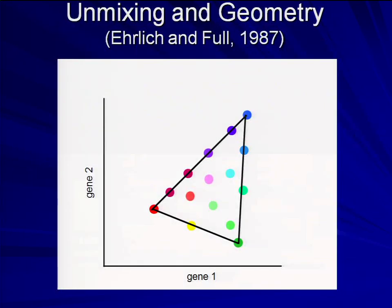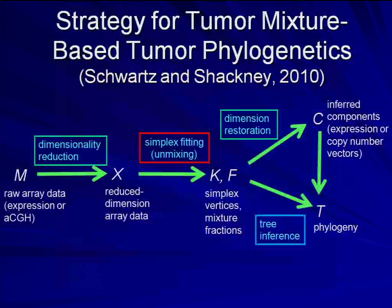The matrix K of three components holds the positions of three vertices, and the matrix F of mixture fractions tells how much of each component appears in each data point. A given data point might have a high fraction of one component, a low fraction of another, and none of a third. We can then reconstruct the full data matrix from these components and mixture fractions, allowing us to infer the pure genetics from the data.